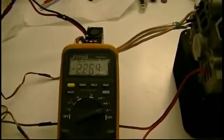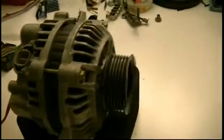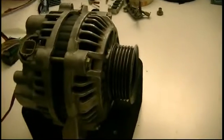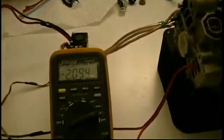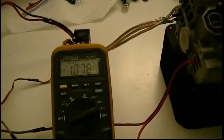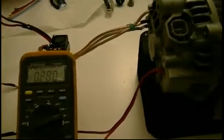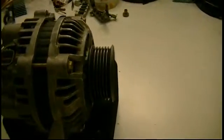So basically how this guy works is you have to give it a bit of field current, and then you can start the motor. And then as you drop the field current, you can get more RPM out of the motor.